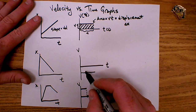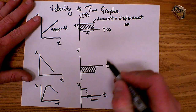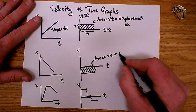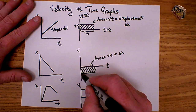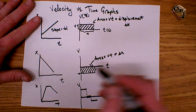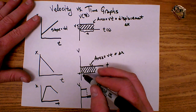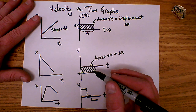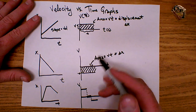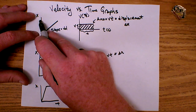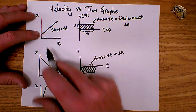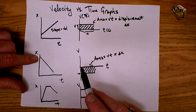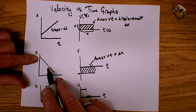Displacement can be negative. If I look at a graph where the velocity is below the t-axis, the area is still v times t — still the displacement — but I have a negative value for velocity times a positive time, giving me a negative displacement. And what does that negative indicate? It indicates the direction. So whether displacement is positive or negative indicates the direction of motion — positive slope means moving away from the origin, negative slope means moving towards the origin.